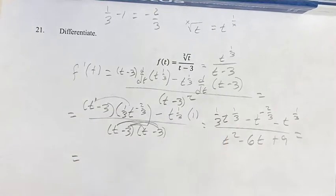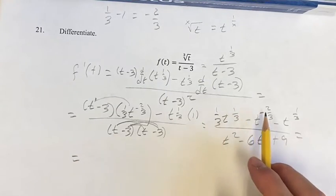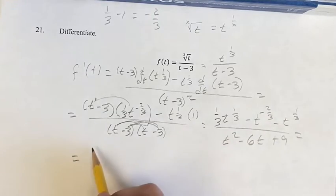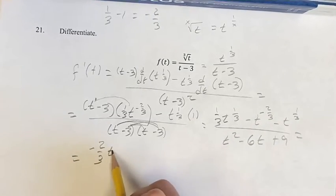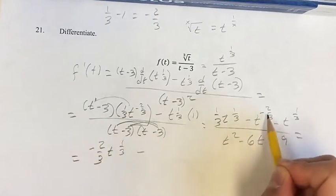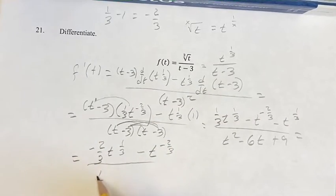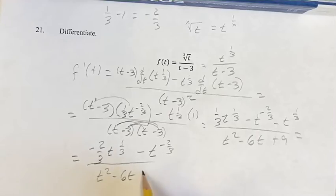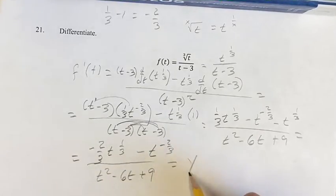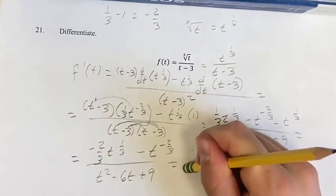And simplifying this, we have two like terms here. So 1 third t to the 1 third minus 1 t to the 1 third, which means negative 2 thirds t to the 1 third, minus our last term, t to the negative 2 thirds. And then the denominator stays the same, and this is your derivative, f prime of t.